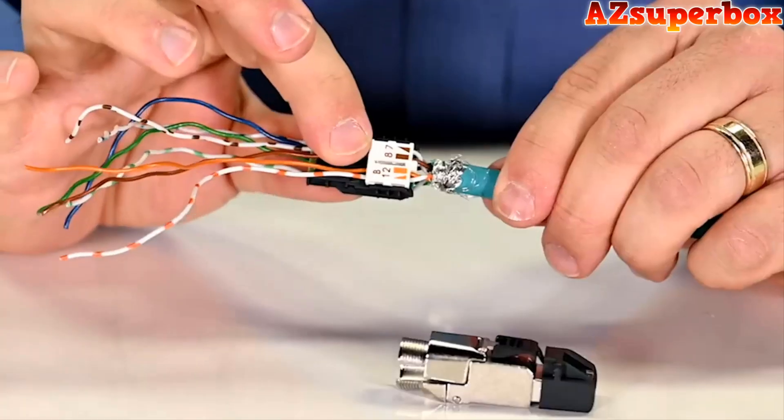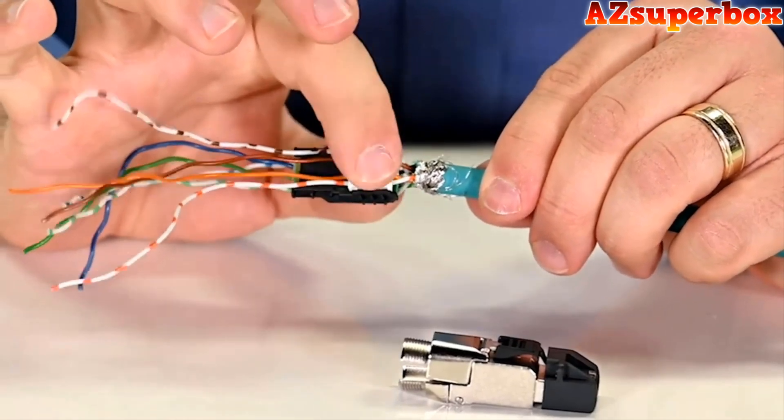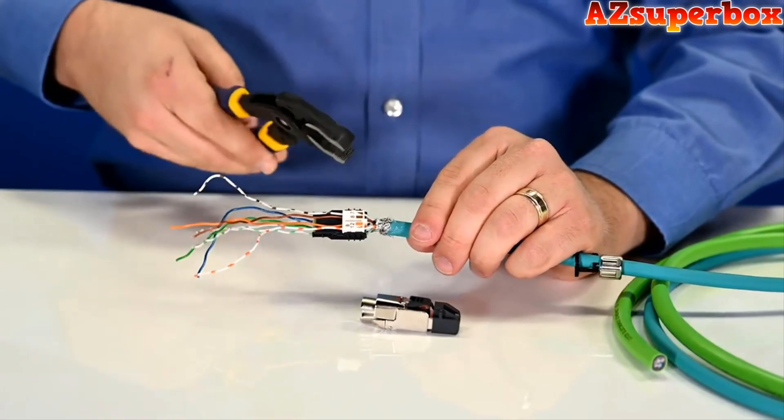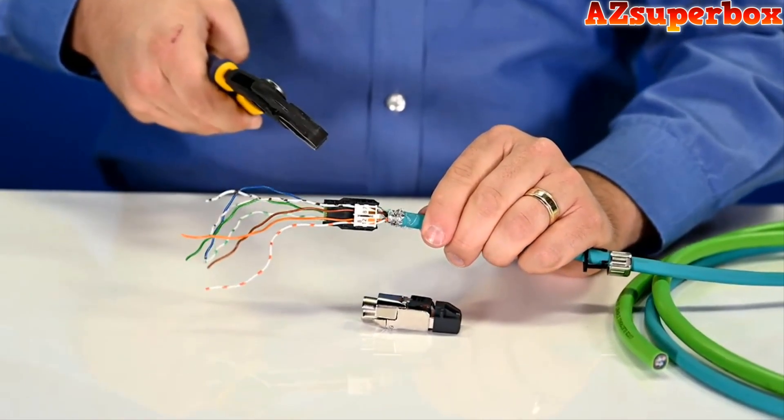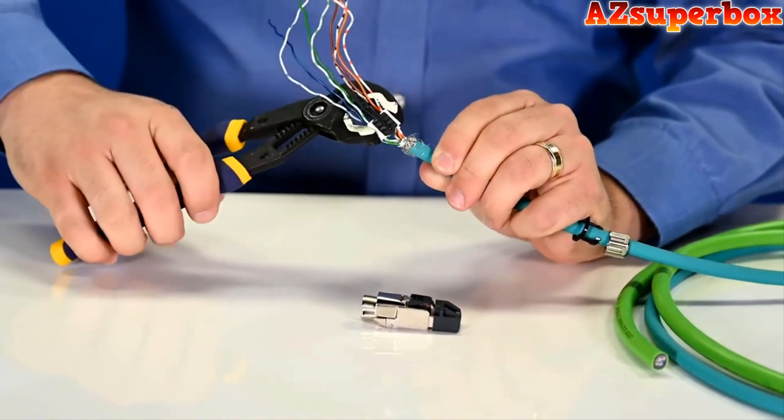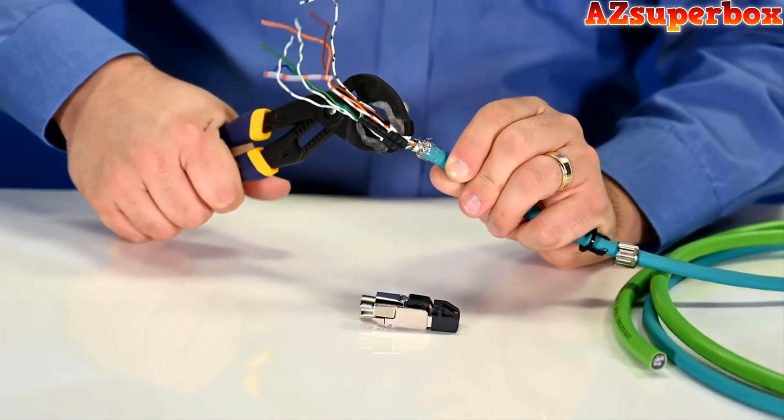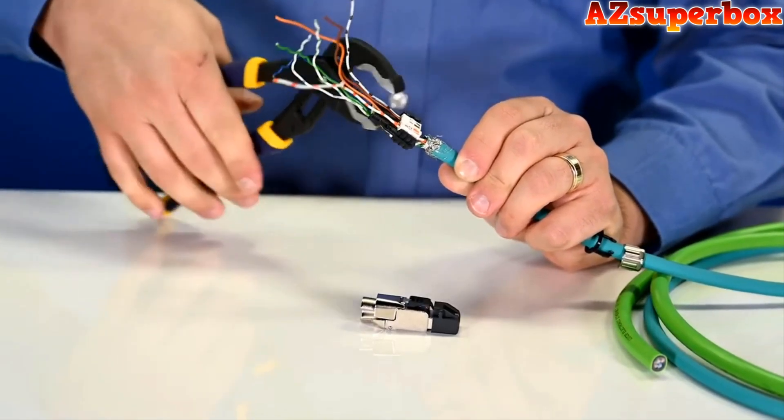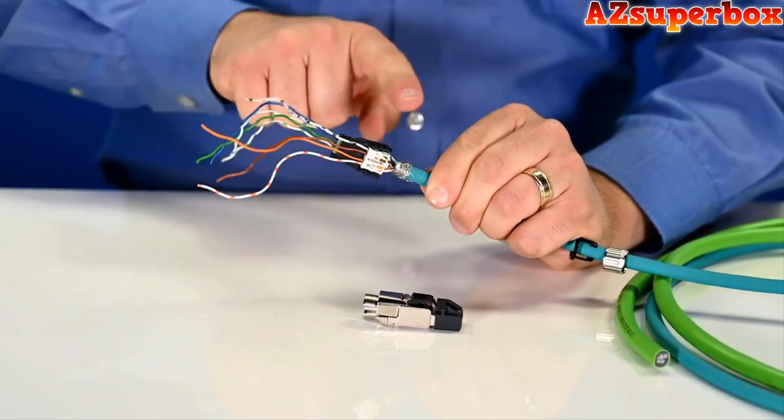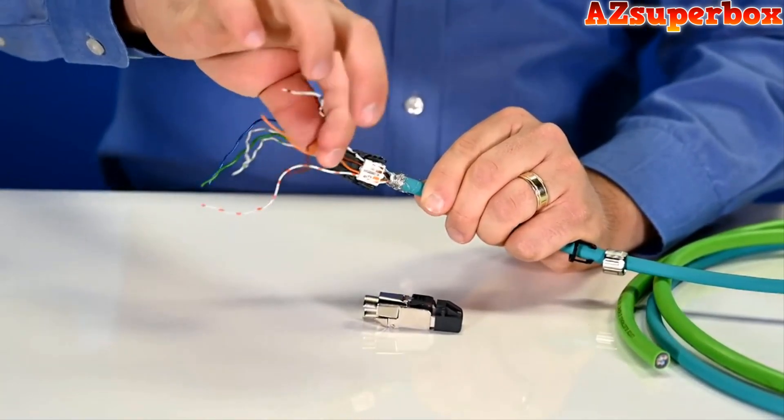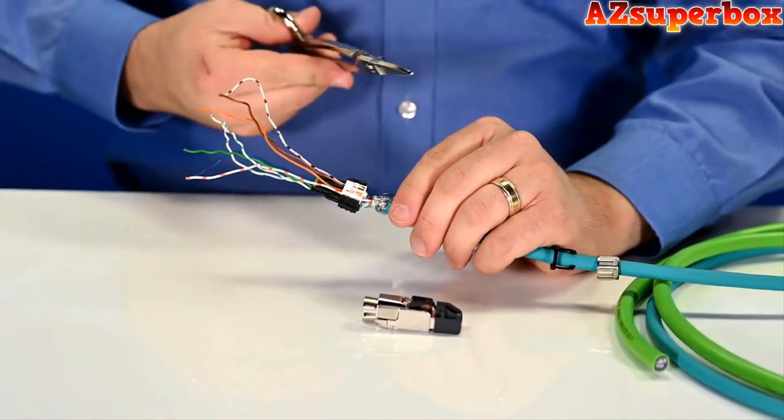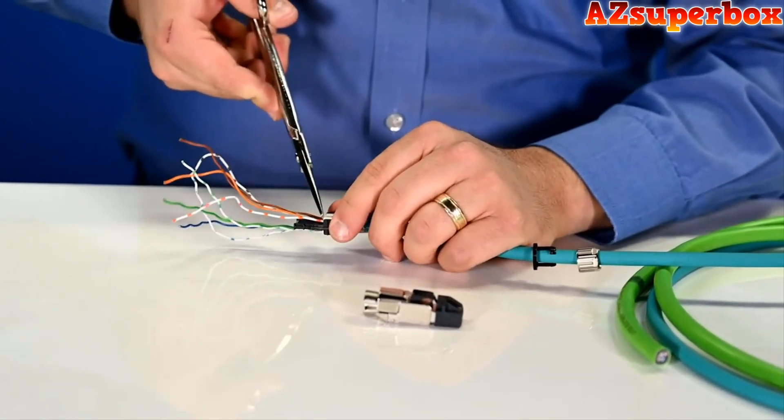Now that we have that nice and tight, it's time to engage those contacts that we talked about. And all you need to do this is a pair of channel locks or something else that applies parallel clamping force. So we want something that's going to put pressure on either side of that connector. And we simply clamp straight down. Make a nice firm connection. And you see that also loosens up this protective plastic housing. Next step is to get rid of all this extra conductor that we have here. So just take a sharp pair of scissors or a pair of snips and we can cut that right away.